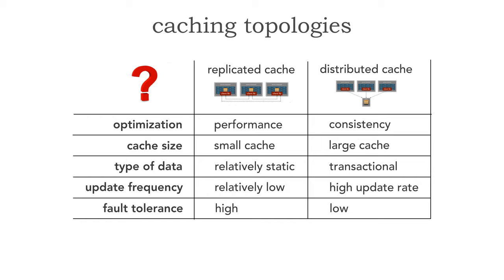The last criterion is fault tolerance, which is especially relevant in microservices. A replicated cache has high levels of fault tolerance — there is no single server or service whose failure loses the cache, since all instances have that same data. If an instance comes back up, it gets instantly replicated once handshakes are made. However, a distributed cache has fairly low levels of fault tolerance — if that cache server goes down, you have no access to data whatsoever. This is an important consideration in high fault-tolerance architectures like microservices.